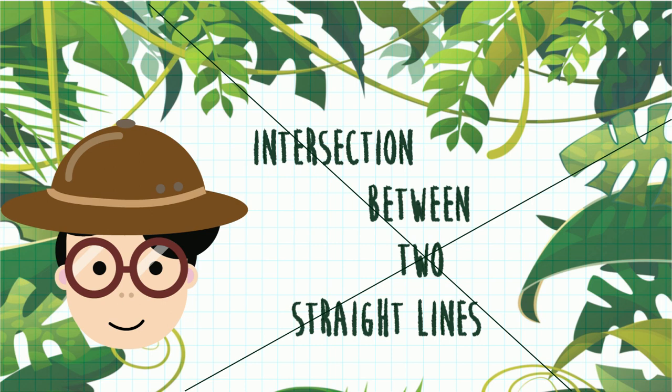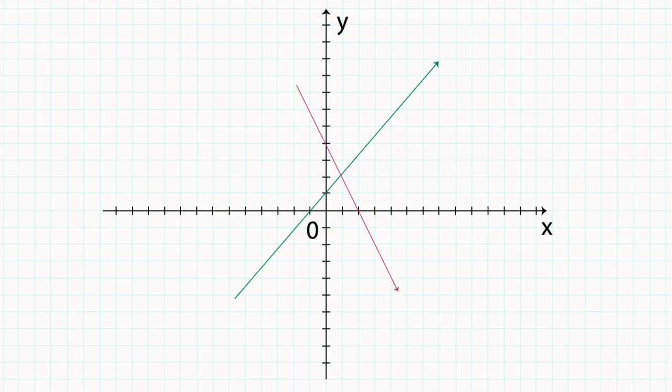Now first of all, let's have a look at this diagram. There are two straight lines y is equal to x plus 1 and y is equal to negative 2x plus 4. I hope you still remember how to sketch linear functions from our previous video.